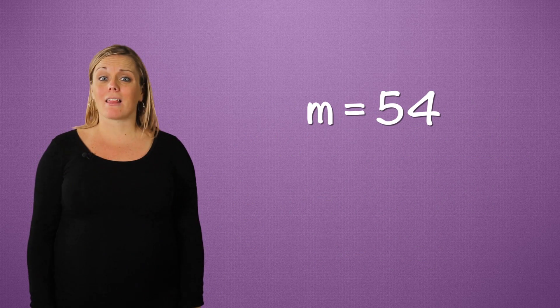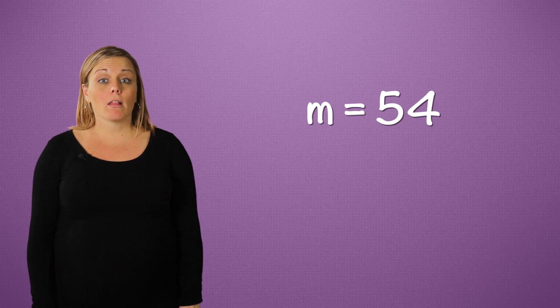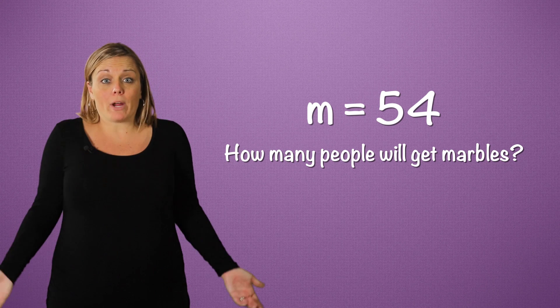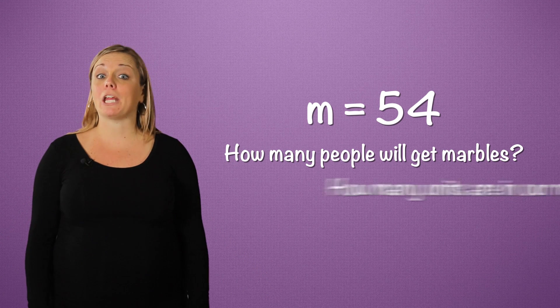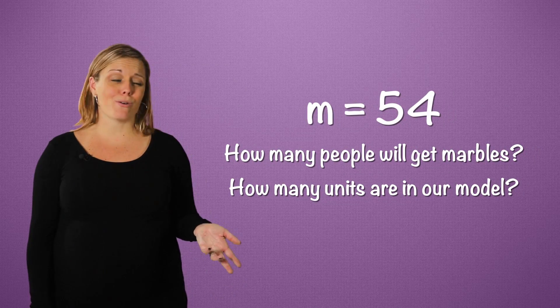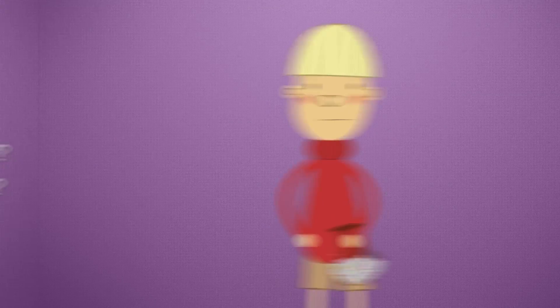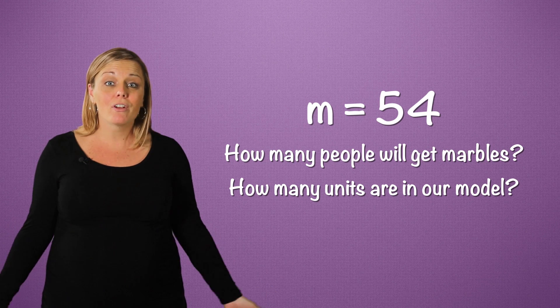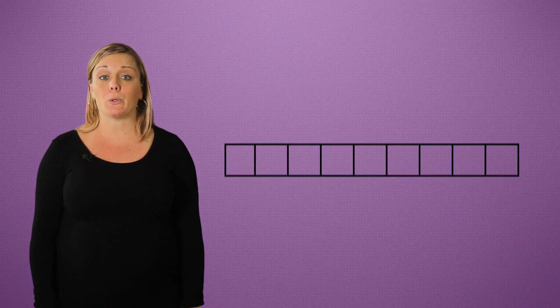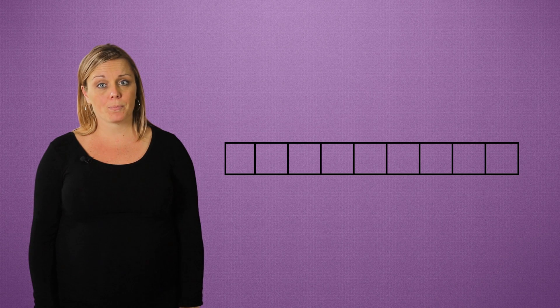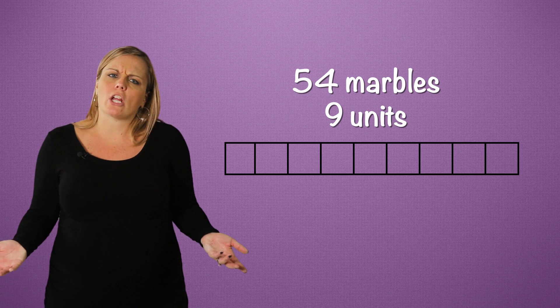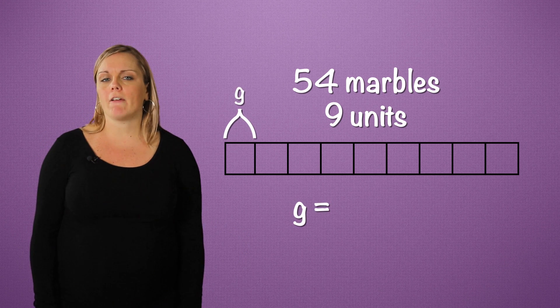54 is still a lot of marbles! Now let's draw a model that represents our problem. How many people will get marbles — or how many units are there in our model? Richard, you forgot yourself! If you want to play marbles with your friends, you have to include yourself! So let's divide our model into 9 units and write an equation. That's 54 marbles divided into 9 units. Use G for the unknown number.